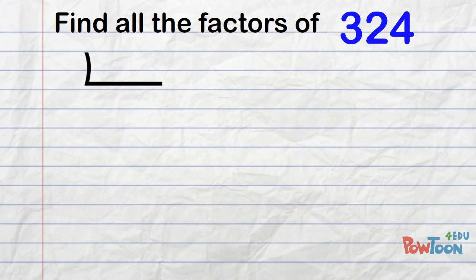We start with division. Our number is even, so we kick off with 2. 2s into 3 is 1, remainder 1. 2s into 12 is 6, 2s into 4 is 2.